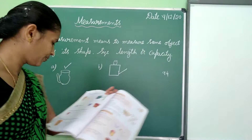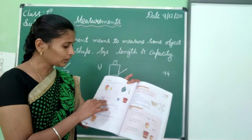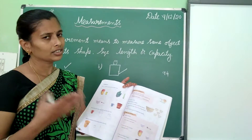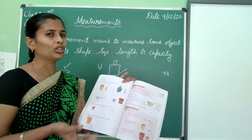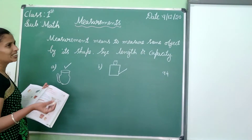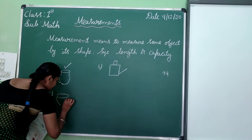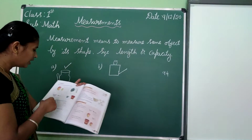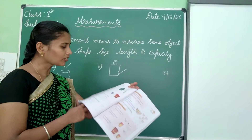Cup and spoon. In these two container objects, which one can hold more water, juice, coffee, tea, milk? Very good. Cup can hold more — water, juice, milk, coffee, tea, whatever. Tick for cup, compared to spoon. This cup is bigger. Tick. It means capacity.